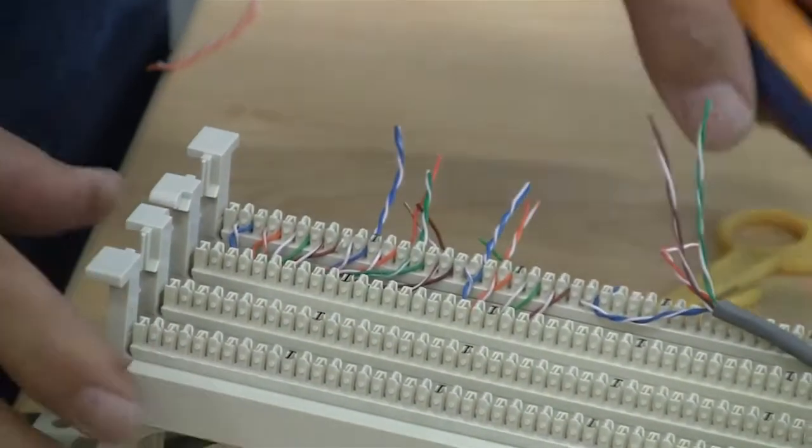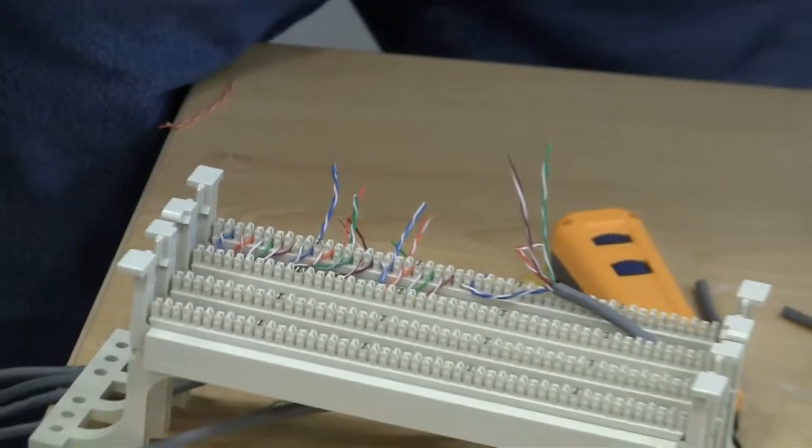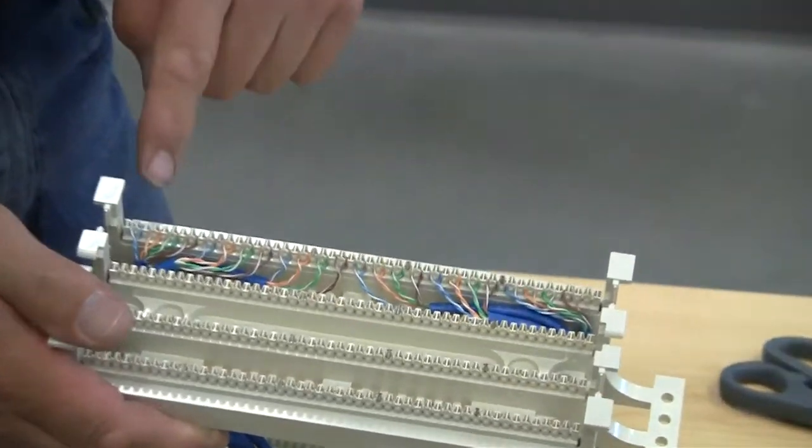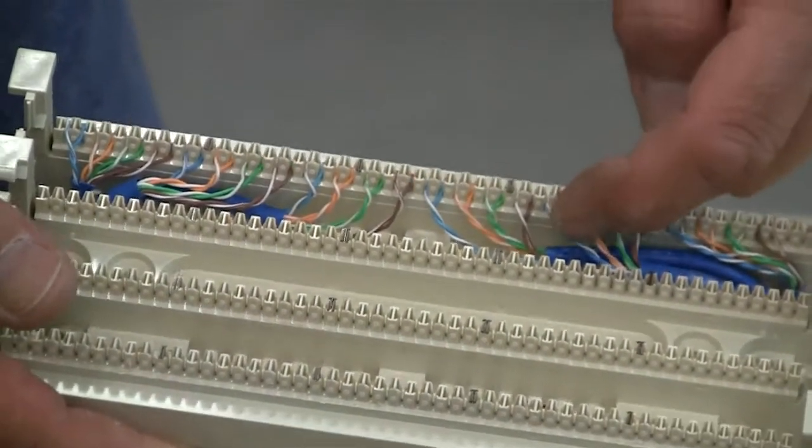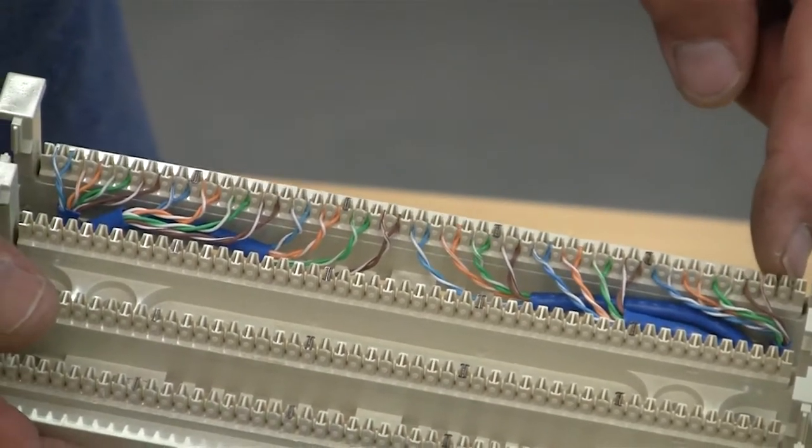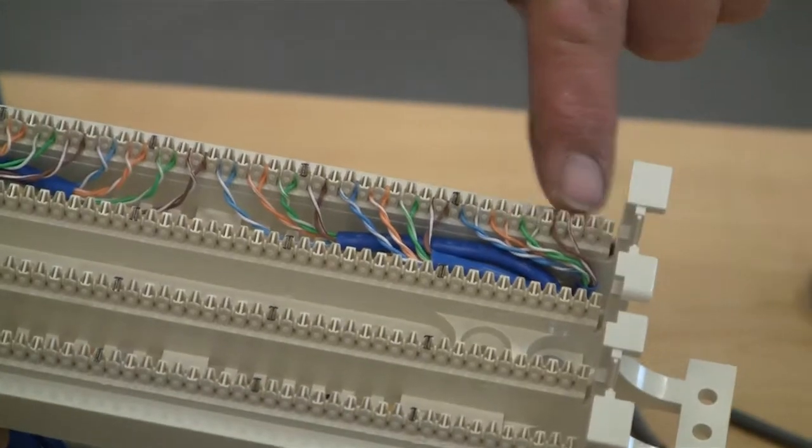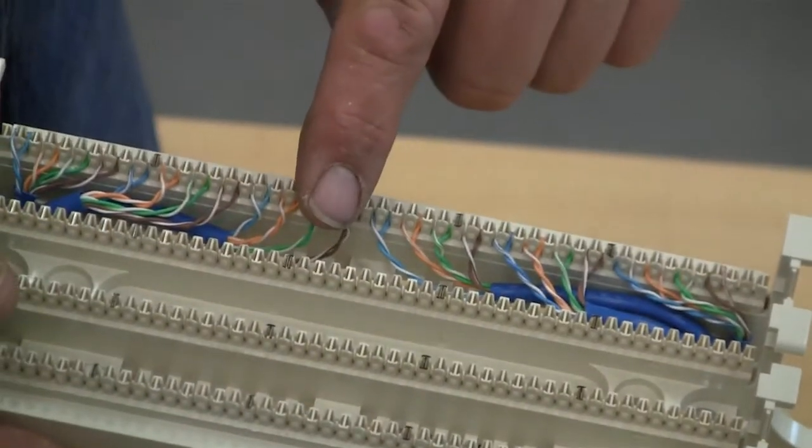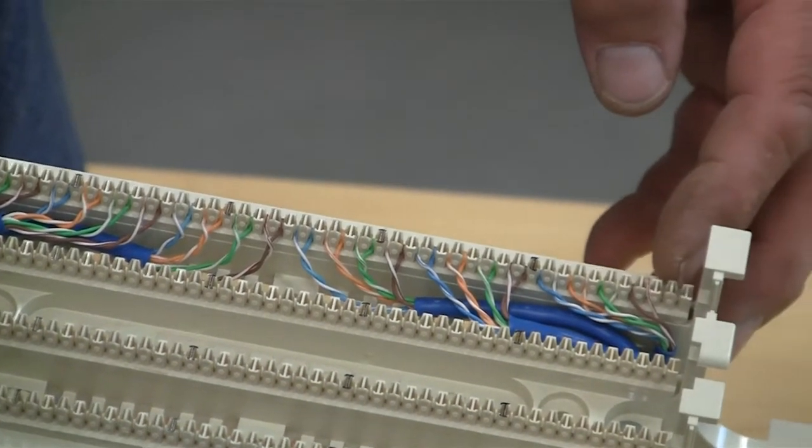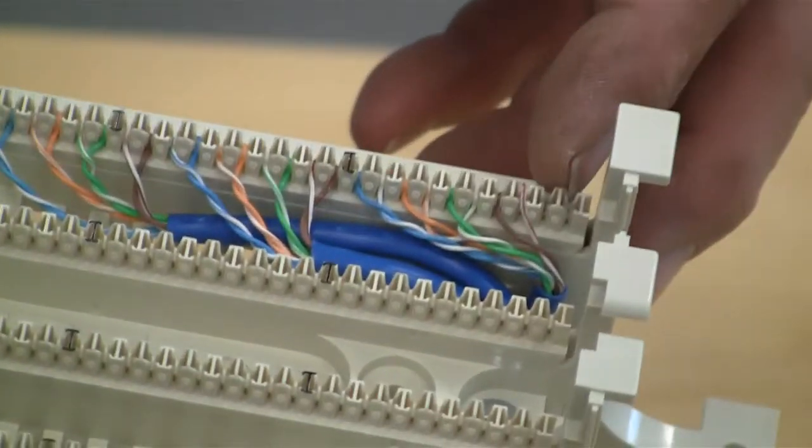So as you go through that process, again when we have it all finished, should look like this. Again, notice the jackets come in as far as we possibly can to keep the integrity of the cable. If you also look, the last pair, because we're using four colored pair and six cables, it only uses 24 of the slots, so the last slot is open.